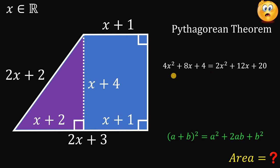Now, let's combine like terms. First, let's subtract 2x squared on both sides. And if we do that, we get 2x squared plus 8x plus 4 equals 12x plus 20.